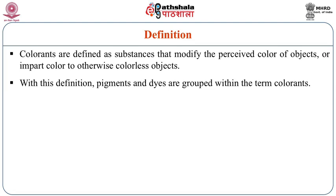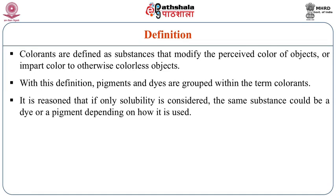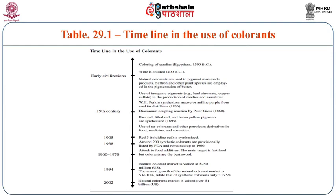With this definition, pigments and dyes are grouped within the term colorants. It is reasoned that if only solubility is considered, then the same substance can be a dye or pigment depending on the application. Coming to the brief history of pigments, these pigments were first used as per the documented records by the Egyptians in 1500 BC. Later on, during early civilization around 400 BC, the pigments were used for coloring wine. From 400 BC through the 1940s, 1960s, and up to 2000, more than 200 food colors have been identified, which are both natural origin pigments and synthetic origin pigments, legally permissible for application in various kinds of foods and for the food industry.